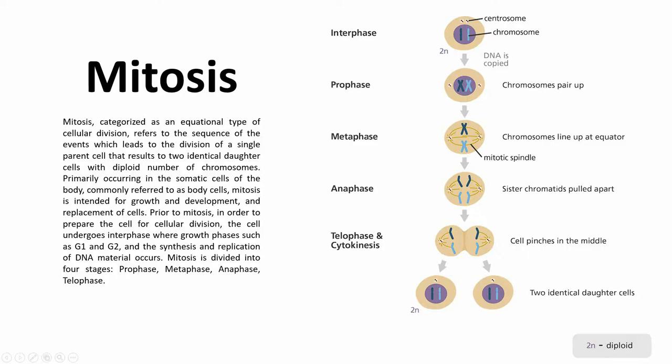First, let us start with the question: what is mitosis? Mitosis, categorized as an equational type of cellular division, refers to the sequence of events which leads to the division of a single parent cell, resulting in two identical daughter cells with a diploid number of chromosomes. You can refer to the image on the right to see how mitosis works. It primarily occurs in the somatic cells of the body, commonly referred to as body cells.